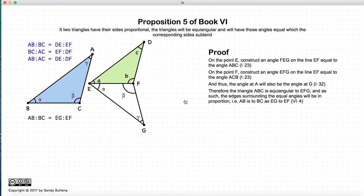So now we have ABC and EFG, and these two triangles are equal angular. And because they're equal angular from the previous proposition of this book, we know that AB to BC will be equal to EG to EF. Again, that was just from the previous proposition.